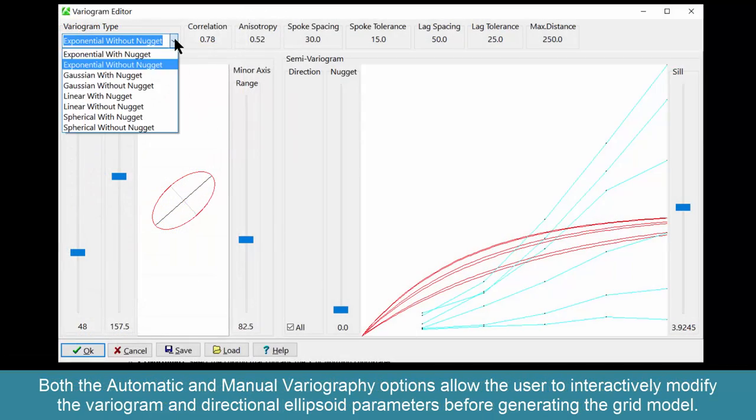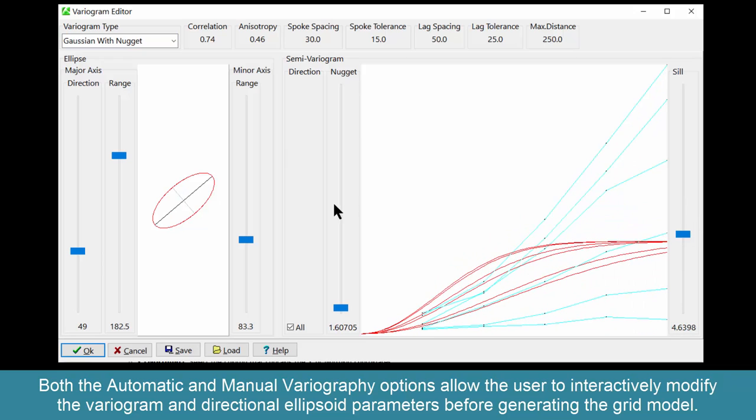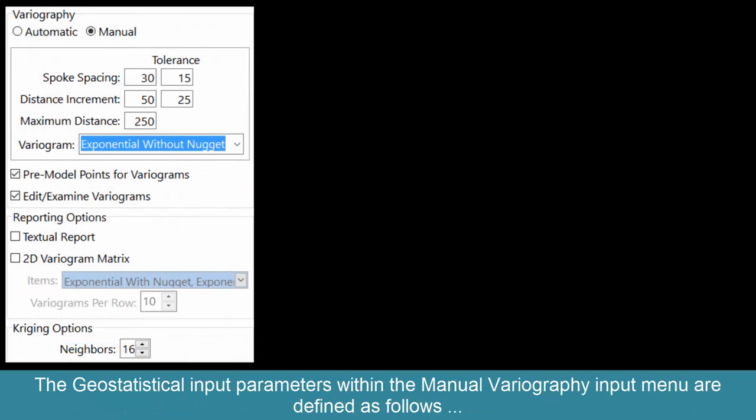Both the automatic and manual variography options allow the user to interactively modify the variogram and directional ellipsoid parameters before generating the grid model. The geostatistical input parameters within the manual variography input menu are defined as follows.